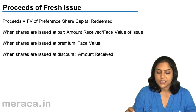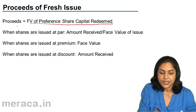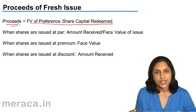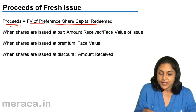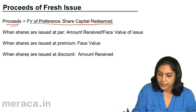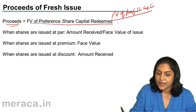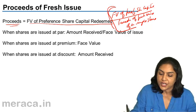Proceeds of fresh issue should be equal to the face value of the preference share capital to be redeemed. In order to compute the number of new shares to be issued, we divide the face value of preference share capital to be redeemed by the proceeds of fresh issue of a single share. This will give us the number of new shares to be issued.